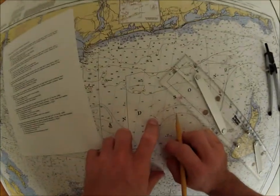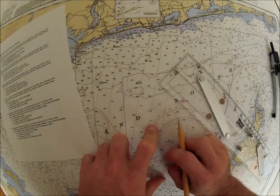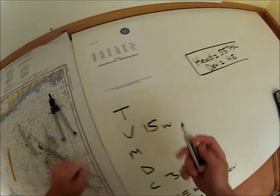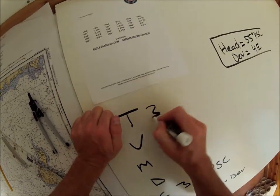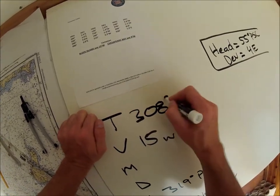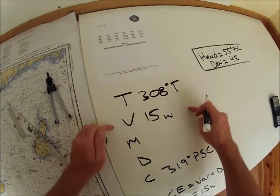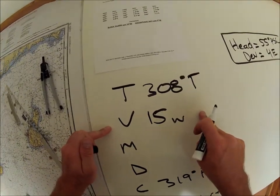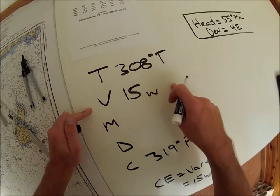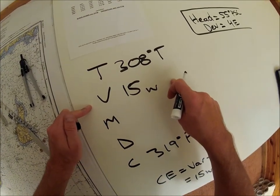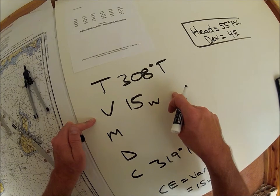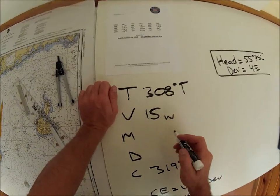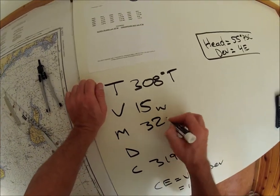I'm seeing 308, 308 degrees true. Okay, going down, 308 plus 15 west is 323. Right? 308, 323, 323.